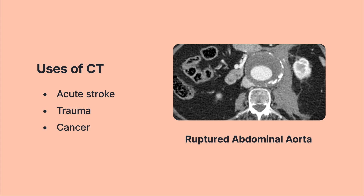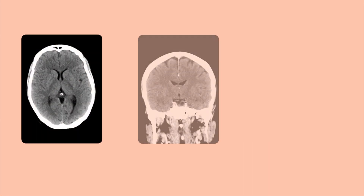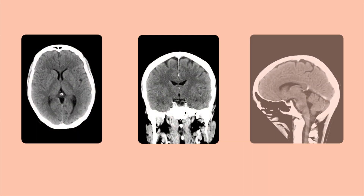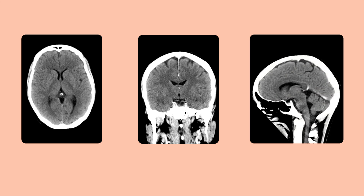Unlike traditional radiographs, which produce just two dimensions of image data acquired from an x-ray source, CT scanners actually create three dimensions of image data — a volume of data — by acquiring projections from all around the patient as opposed to just one view. This means more radiation dose to the patients, but also significantly more information available to make a well-informed diagnosis.